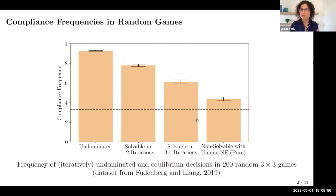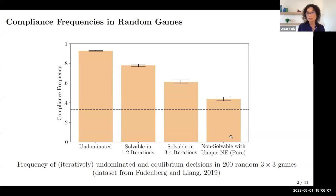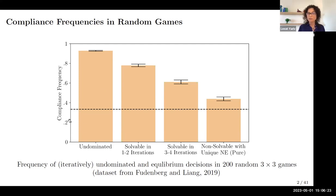What you're seeing is the compliance frequency as a function of the complexity of the game in terms of how many iterations are required. Starting from the right, in games with a unique Nash equilibrium that is pure but not dominant solvable, we see the lowest rate of compliance. As you move left, you see incremental increases as a function of the number of iterations. The baseline of one-third shown by the dashed horizontal line is where players randomly pick an action — they're doing better than that, but the number of iterations is clearly important.